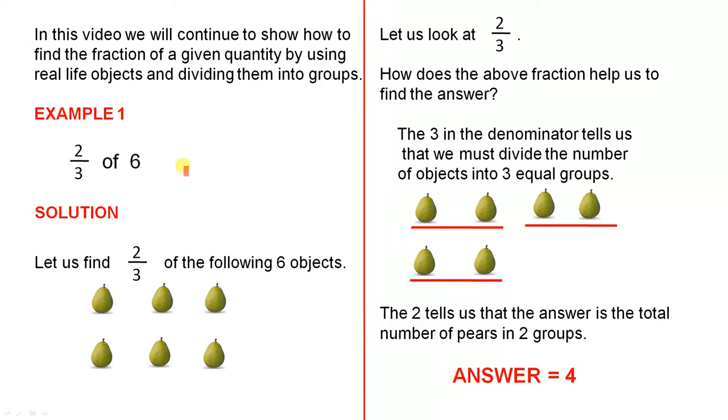Two thirds of 6. The solution, as we did in the previous videos: let us find 2 thirds of the following 6 objects, so here are 6 pears.